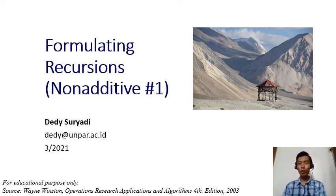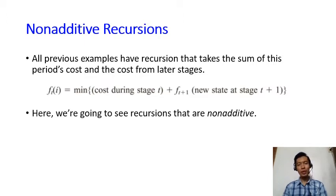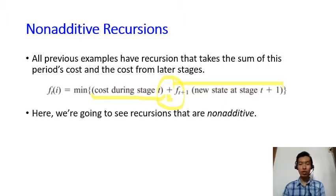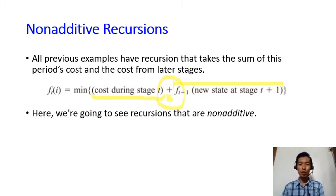In this video and the next one, we are going to look at recursions that are called non-additive. All the previous examples we've seen so far show that the recursion looks like the cost from this stage t plus the cost from the remaining stages. However, we are going to see recursions that do not use this relation of addition. These are called non-additive — you don't need to memorize the name, but you need to know how it works.